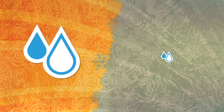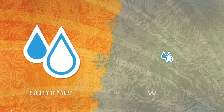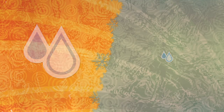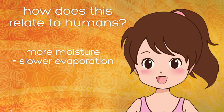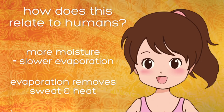Warmer air can hold more moisture. Therefore, in the summertime, the air is holding much more moisture than it would be in the winter. How does this relate to humans? Well, more moisture in the air slows the amount of evaporation. Evaporation removes moisture or sweat from our skin, which also removes heat, which cools our body.